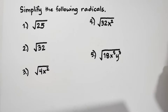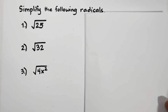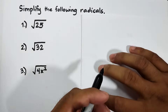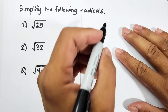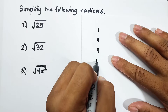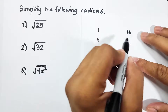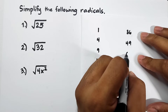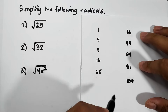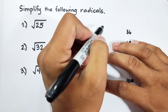So what we have here is that we are asked to simplify the following radicals. I suggest that before diving into this kind of topic, what you need to do is to memorize the first 10 perfect square numbers. We have 1, 4, 9, 16, 25, 36, 49, 64, 81, and 100.